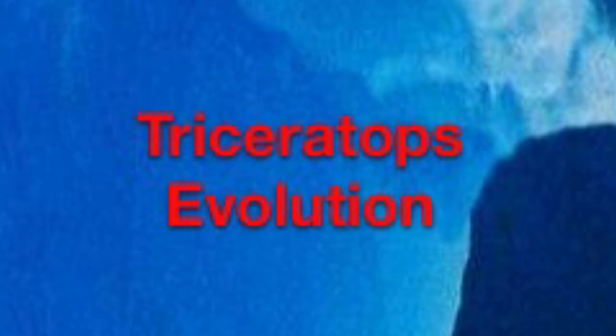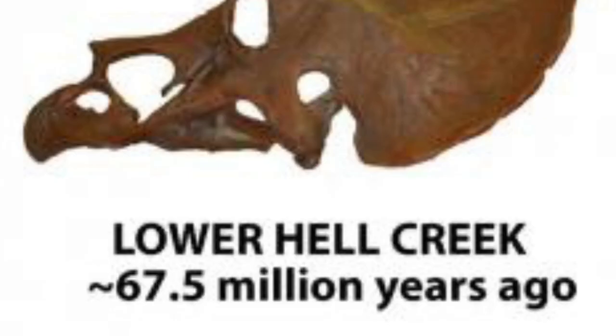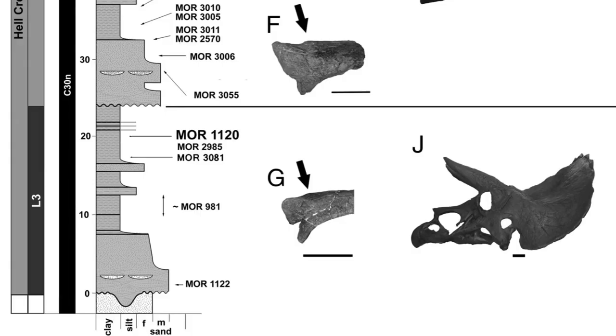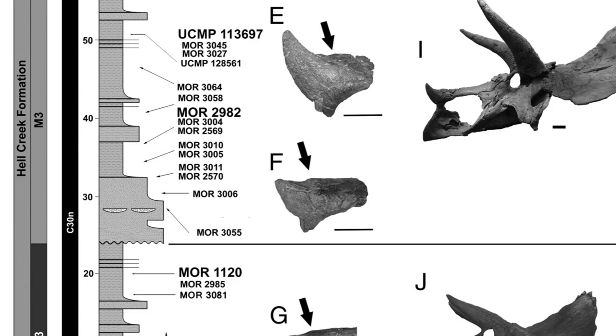Triceratops Evolution. In 2014, John Scannella of Montana State University and his team examined more than 50 skulls of the two known Triceratops species — T. horridus and T. prorsus — and, based on morphological differences and placement in the strata, determined that the former species evolved into the latter through anagenesis. This probably explains why T. horridus went extinct before T. prorsus showed up in the fossil record; it would have simply given way to a new species of Triceratops.